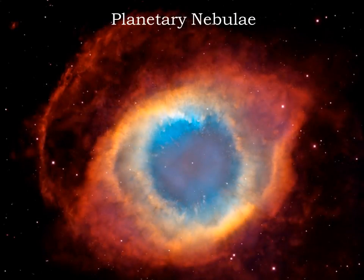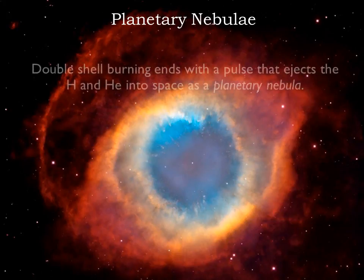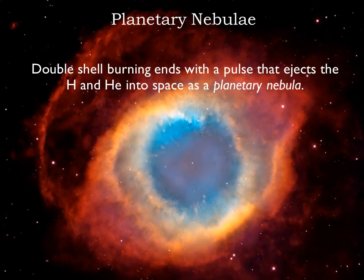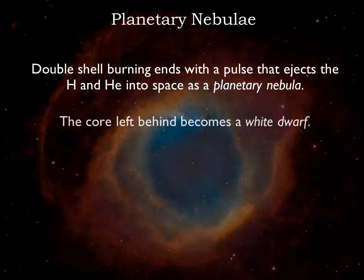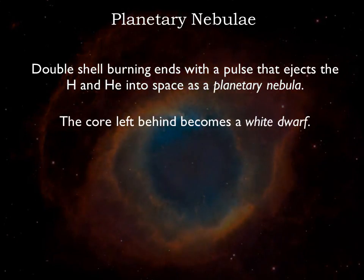The double shell burning phase will end with a pulse that ejects the hydrogen and helium into space as a planetary nebula. Planetary nebulae have nothing to do with planets — the name comes from the fact that some planetary nebulae look like planets through small telescopes. A planetary nebula will fade as the exposed core cools and the ejected gas disperses into space. The nebula will disappear within a million years, leaving the carbon core behind as a white dwarf.